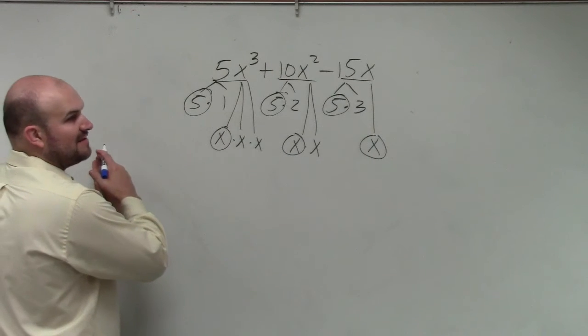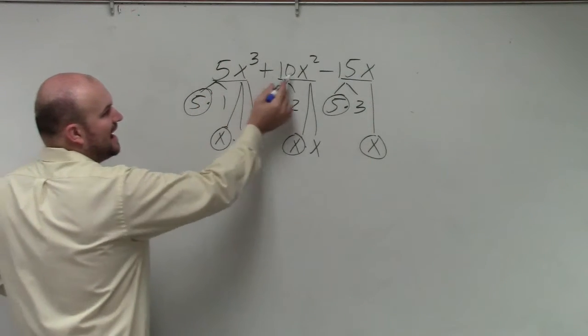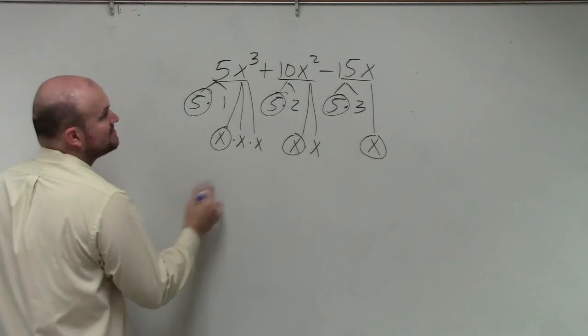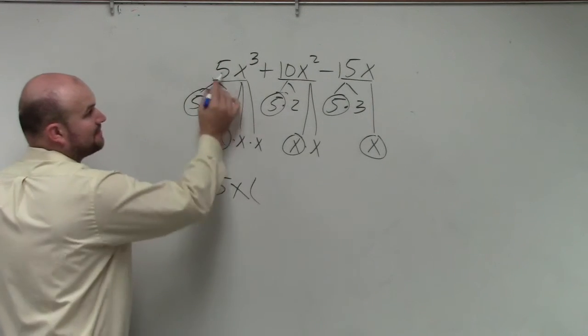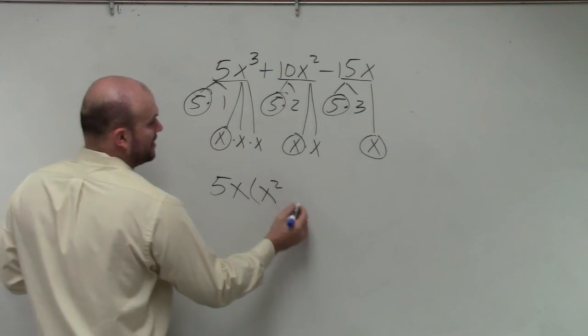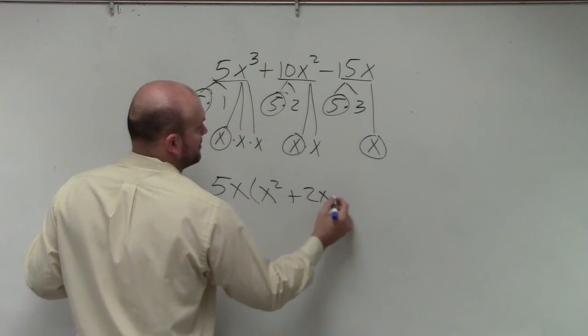So if you divide it out of 5x, basically you're dividing out a 5x from each of these three terms, which would give you, when you divide out 5x, that leaves you with x squared plus 2x minus 3.